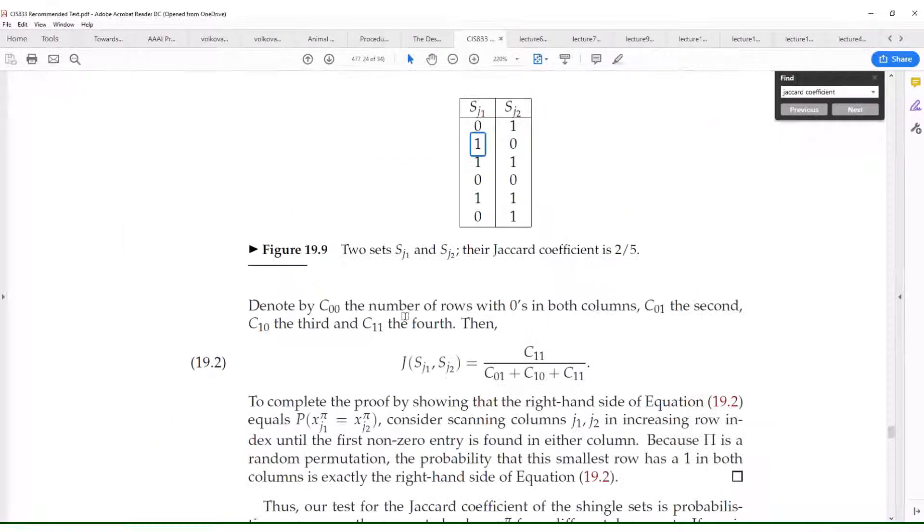So now here, this Jaccard coefficient, we look at where do we have in each of the rows, where do we have one-one? Now if you have one-one, that means that particular term occurs in the two places, so we count it as one. That is an intersection of the term. Then this is another term. Look at it, this term here, this and this, we see that it occurs in these two places, then we count it as two.